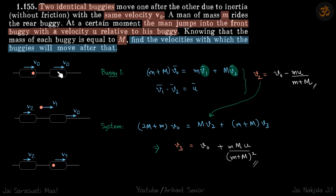We have these two buggies that are moving with velocities v0. This one has a man inside, and after some time this man jumps into the forward buggy such that while jumping, his velocity relative to the original buggy is u.